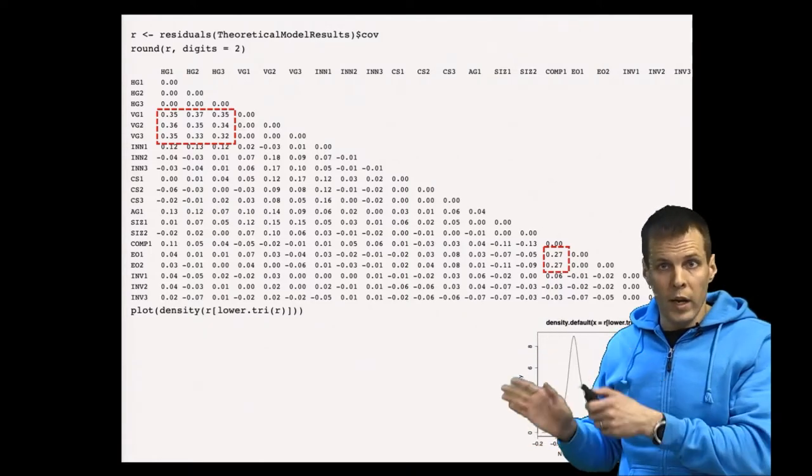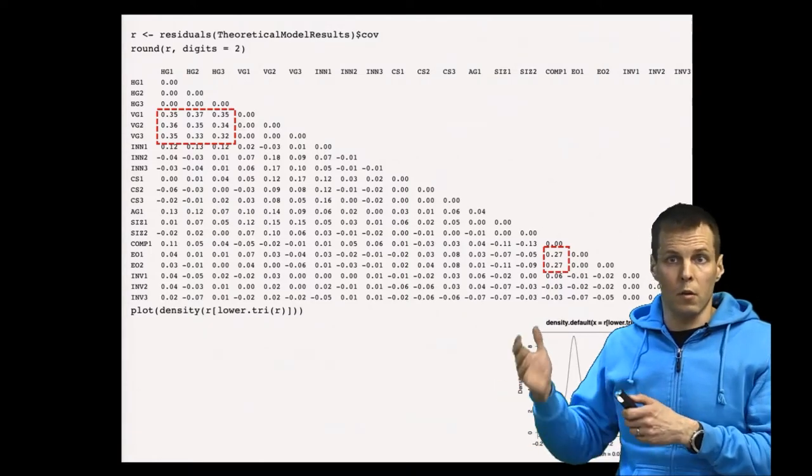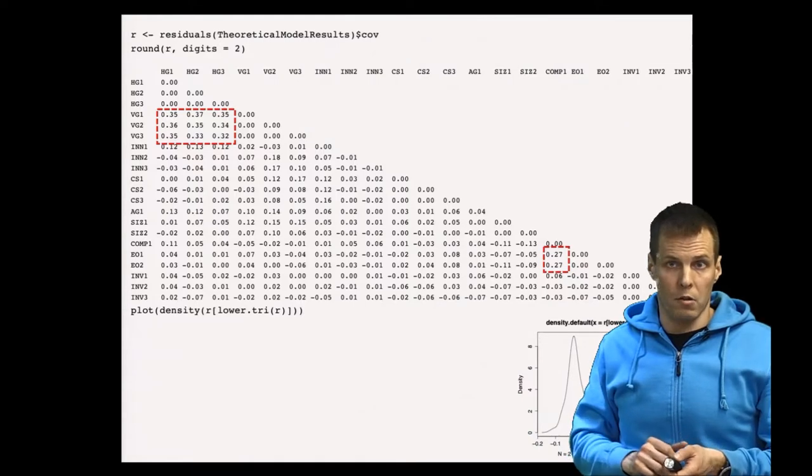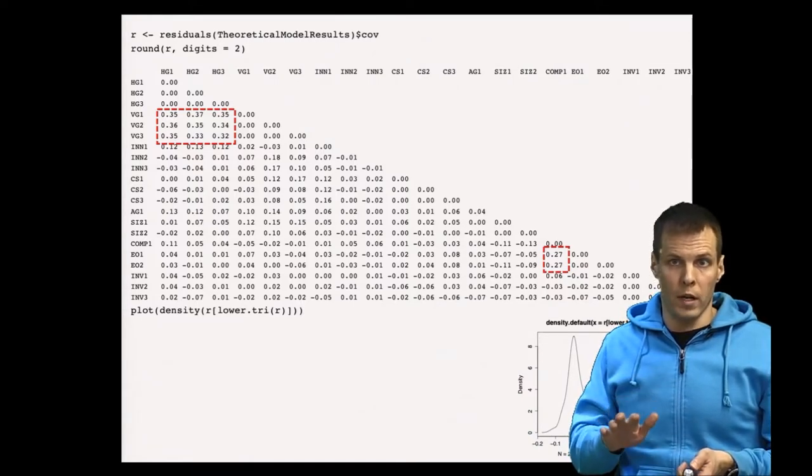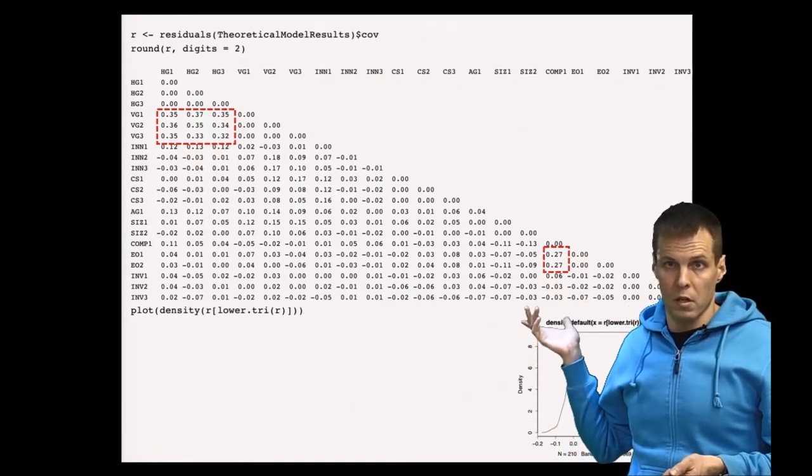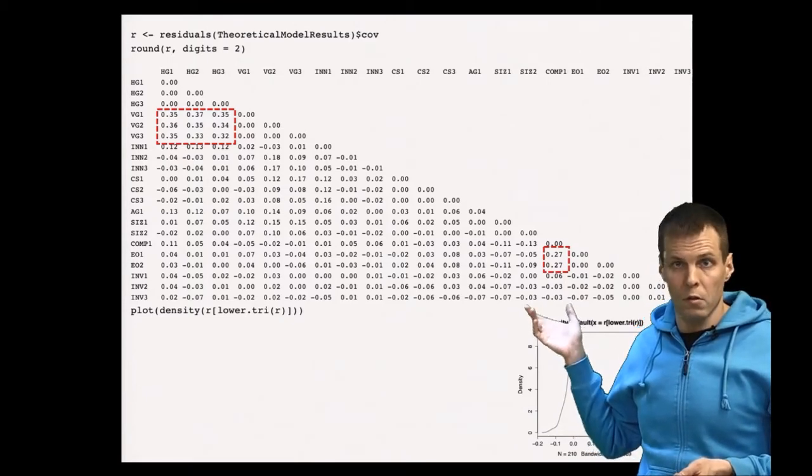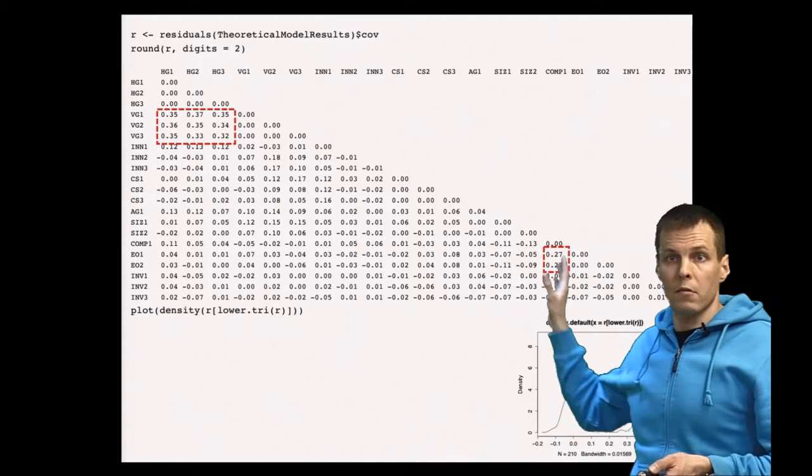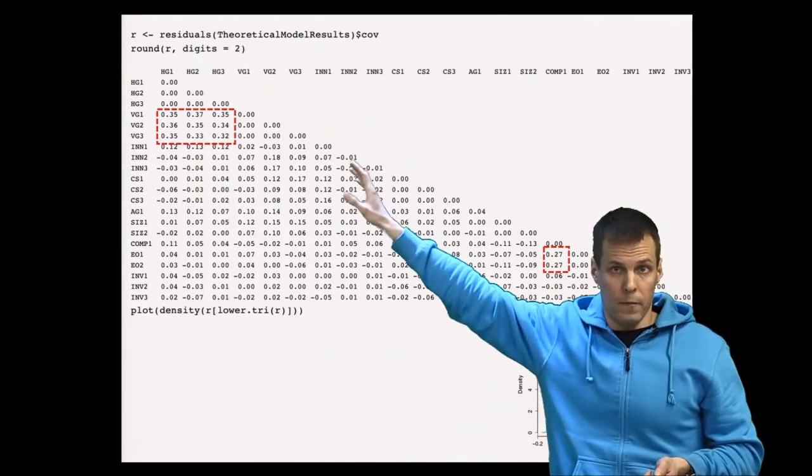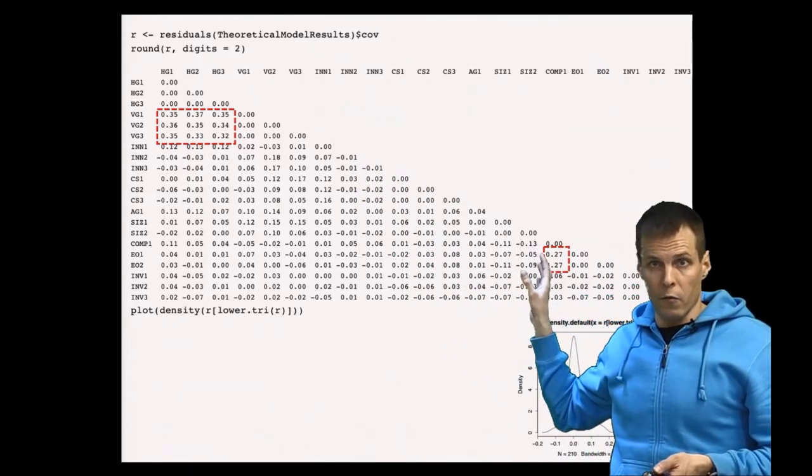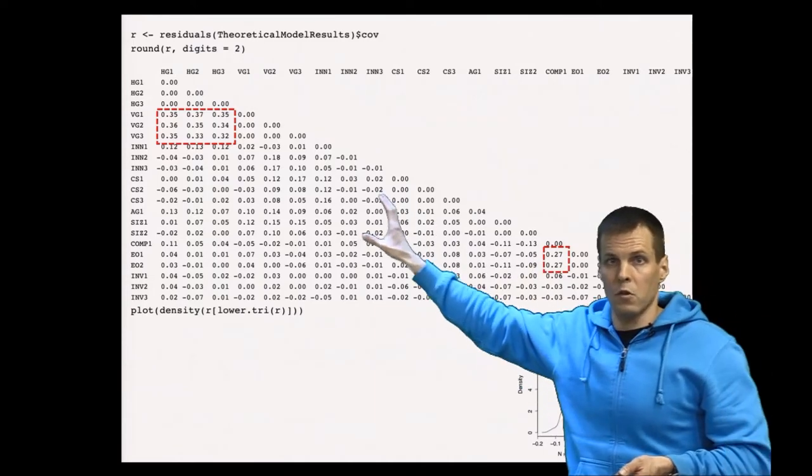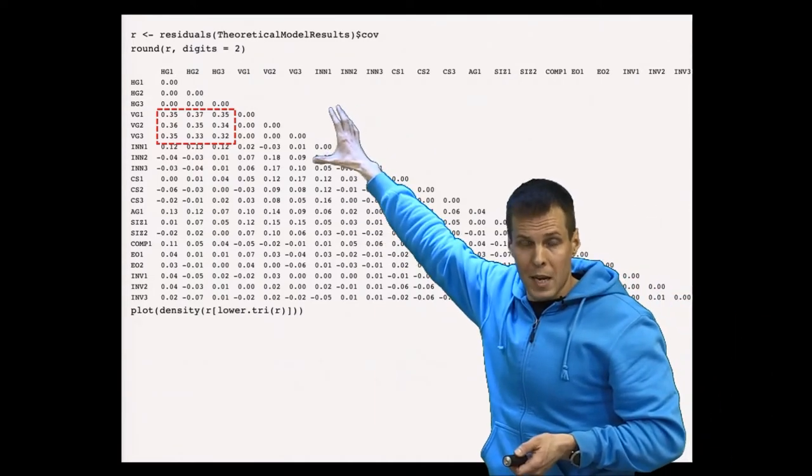The way I do diagnostics is that I usually quickly check the modification indices if my model doesn't fit well, and then I print out the residuals. It may also make sense to print out a part of these residuals. Once you have identified a segment of the matrix where you have large values, then you could fit a sub-model.